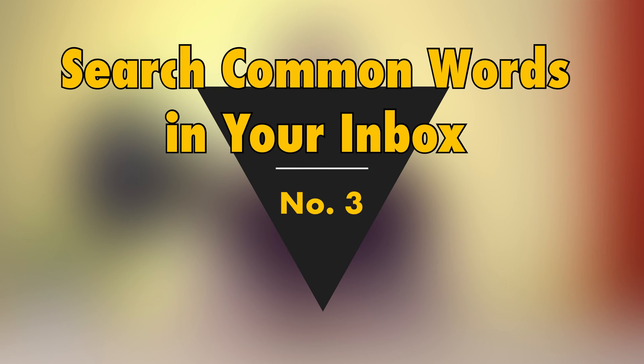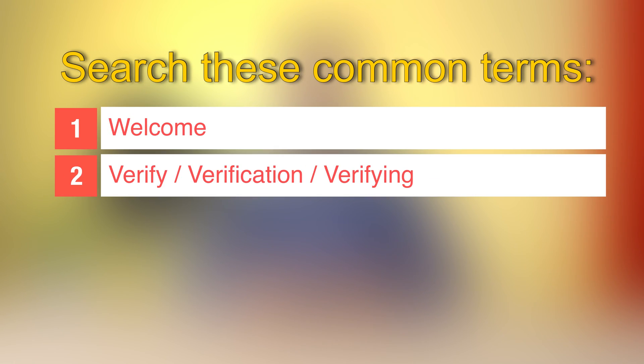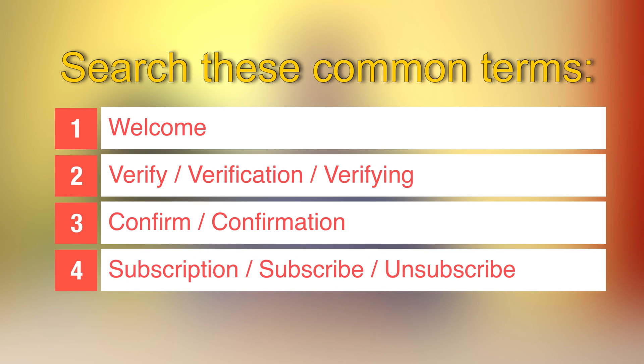Number three: search for common words in your inbox. Try searching for your common usernames first, and then search for some keywords like 'welcome,' 'verify,' 'confirm,' 'subscription,' 'unsubscribe,' and 'activate.' You need to spend some time on this step, but this one will probably result in the most precise outputs.